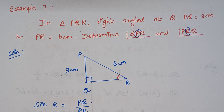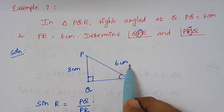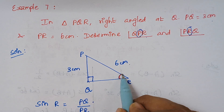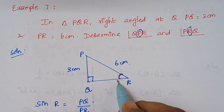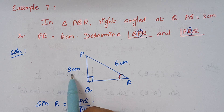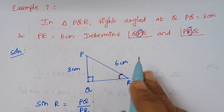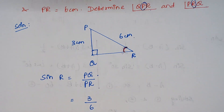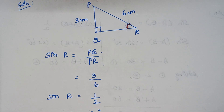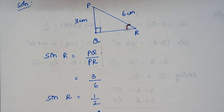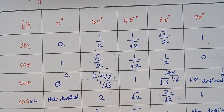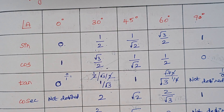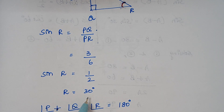We are provided with two sides and need to find angles R and P. Starting with angle R: for this angle, PQ is the opposite side and PR is the hypotenuse. So sine R = PQ / PR = 3 / 6 = 1/2. Looking at the table, sine equals 1/2 at 30 degrees. Therefore angle R is 30 degrees.